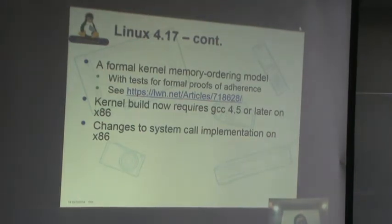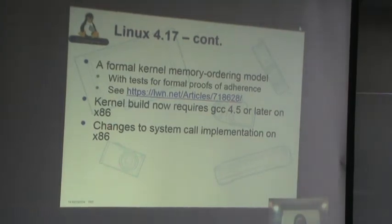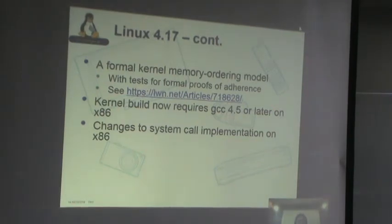Another really interesting thing in 4.17: there's now a formal kernel memory ordering model. There's a document that describes exactly how the memory ordering model of the kernel works — it's very complicated because it has something called RCU (Read-Copy-Update) where a lot of things can happen out of order. The document is exact enough that they've been able to write formal proofs and some tests. The testing code is in its infancy, but it will do formal verification at the source code level that the code adheres to the memory ordering model. To my knowledge, this is the first time we've had formal proofs of code correctness in the kernel.